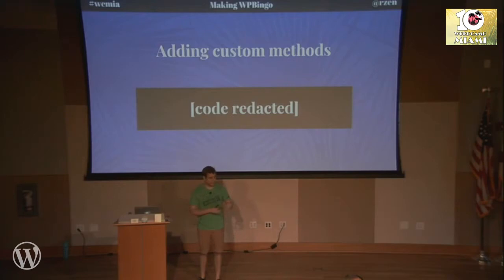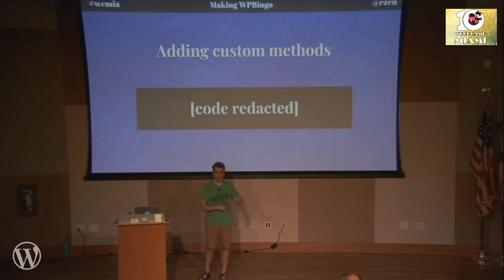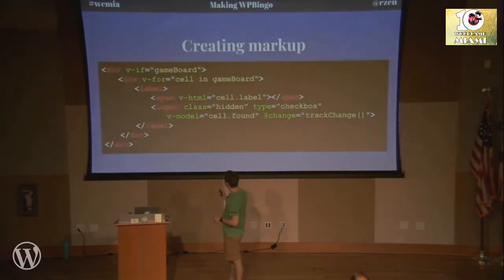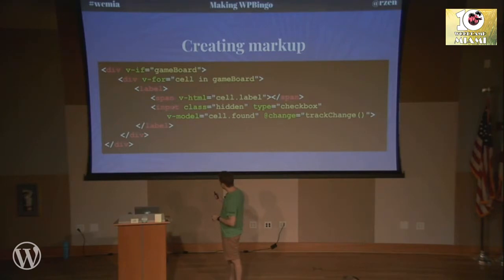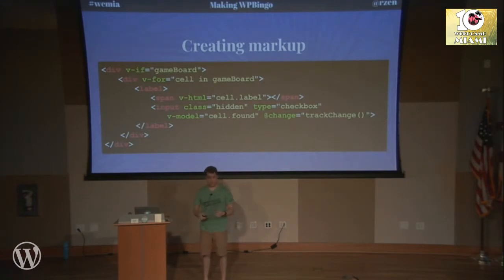One cool thing about Vue, which makes it more like React but does require external dependencies and build tools, is that you can make lots of smaller components. I could have had one component that is a game board, and another component that is a bingo square, with each responsible for their own separate things. I did not write it that way — I mashed it all together because it was faster to write, experiment, and learn.